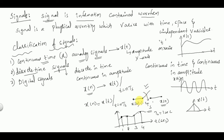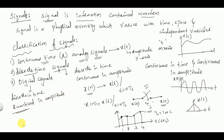The third classification is digital signals. Digital signals are discrete in time and quantized in amplitude. Quantization means rounding off to the nearest value. Digital signals are obtained from discrete time signals, which are in turn obtained from continuous time signals. For example, a sample value of 1.5 is converted to its nearest rounded value, which is 2, and this process is called quantization.